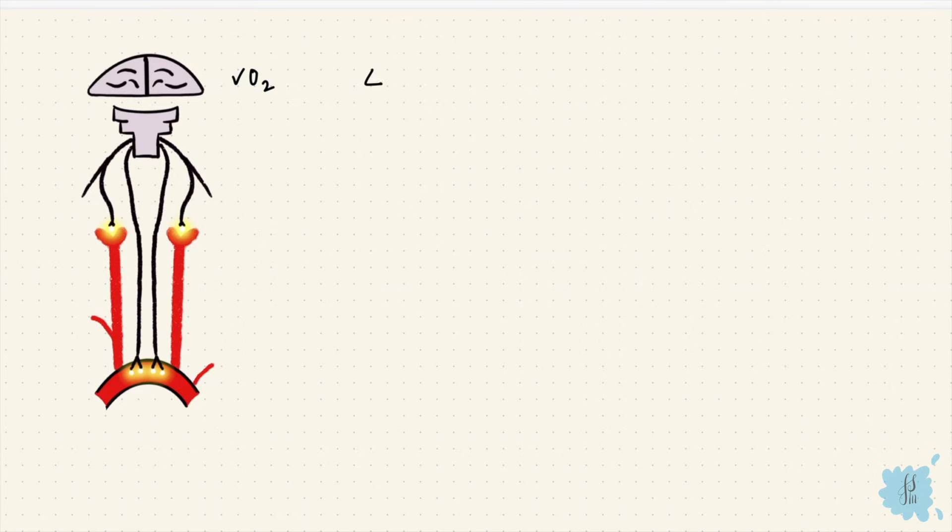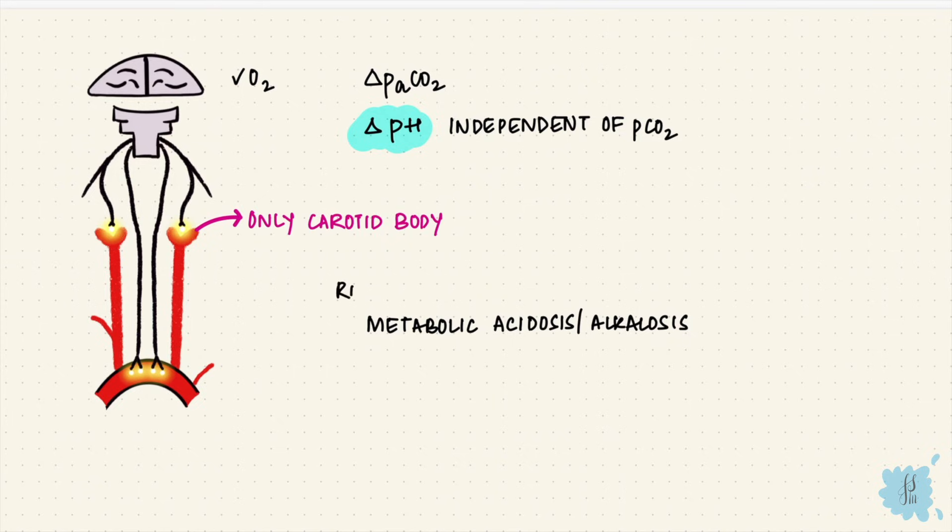Now all of this was oxygen. The peripheral chemoreceptors can also directly detect changes in arterial carbon dioxide and in the pH, so that's the hydrogen ions. Not as much as the central, but yes, they can. Unlike the central, the detection of pH changes is independent of the carbon dioxide. So even if the pH change is coming from metabolic acidosis or alkalosis, the peripheral receptors can detect it, but only the carotid bodies. And that's important for how the lungs compensate in metabolic acidosis and alkalosis, and so in maintaining acid-base balance.